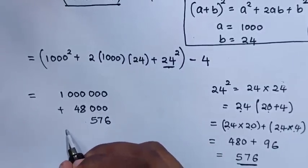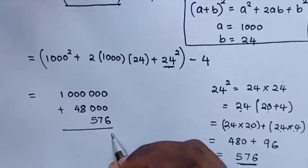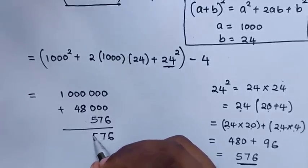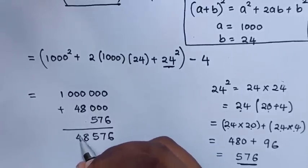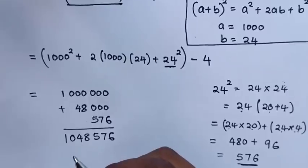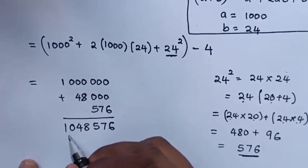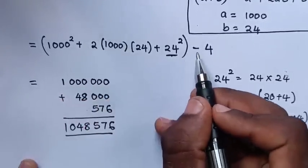Then we sum up: it will be 1,048,576. Remember this was inside the bracket.